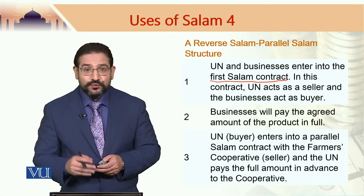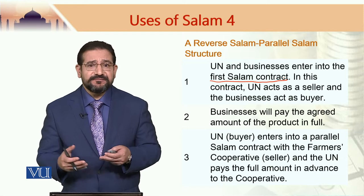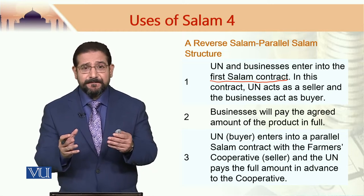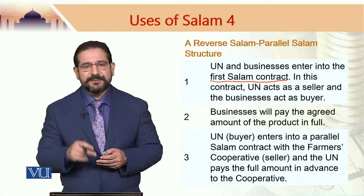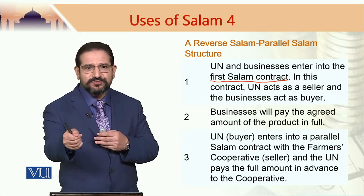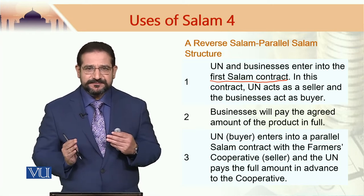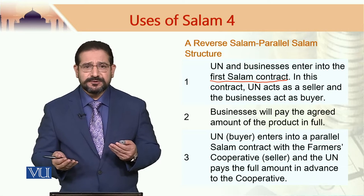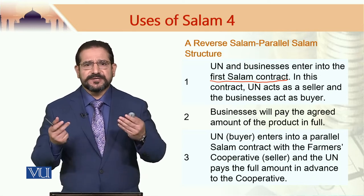In this contract, the UN acts as the seller of commodities, and businesses in different parts of the world — for example, in the United States of America — buy certain commodities on a salam basis from UNDP. This is step one, salam one. In this case, the businesses are giving money to UNDP, so in a way they are financing the activities. The money from businesses, for example from Costa Coffee and Starbucks and other coffee companies, goes to the United Nations Development Programme — referring, for example, to coffee beans.